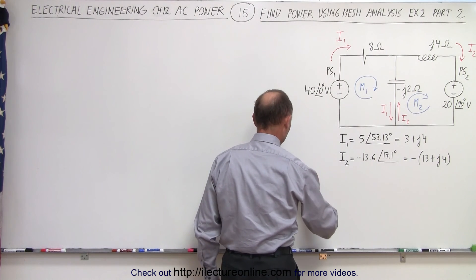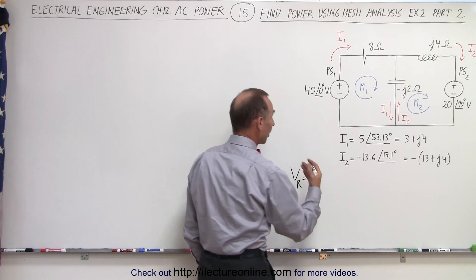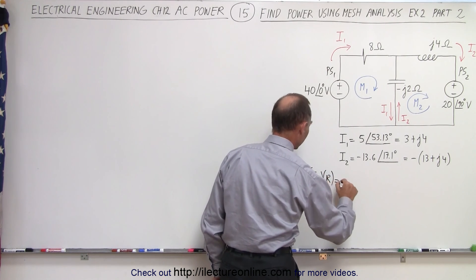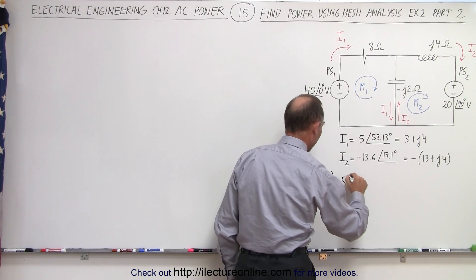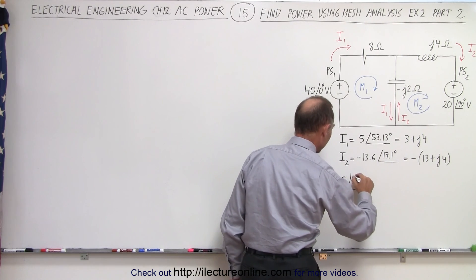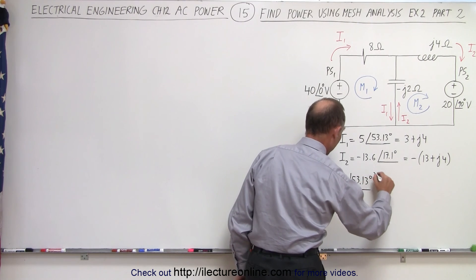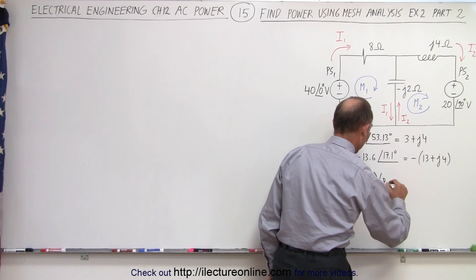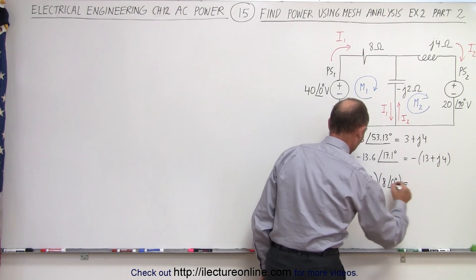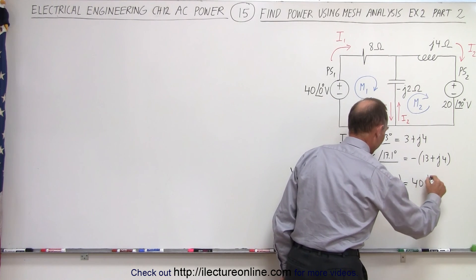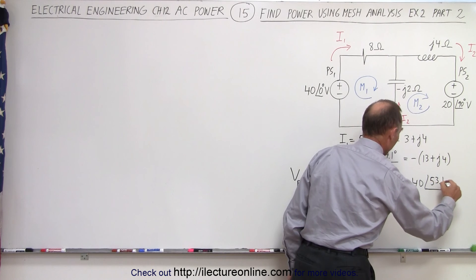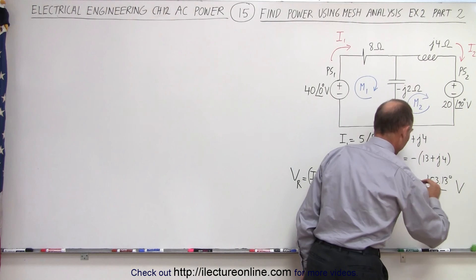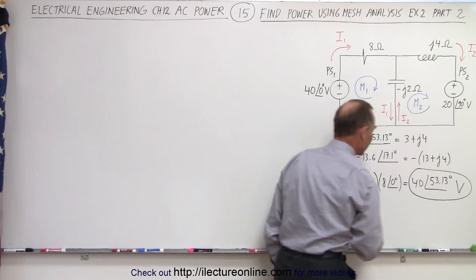The voltage across the resistor is going to be equal to the product of the current I1 multiplied times the resistance R. So in this case, I1 is given to us by 5 with the phase angle of 53.13 degrees, and we're going to multiply that times the resistance, which is equal to 8 with a phase angle of 0 degrees. So when we multiply this, we get 40 with a phase angle of 53.13 degrees, and that is in terms of volts.